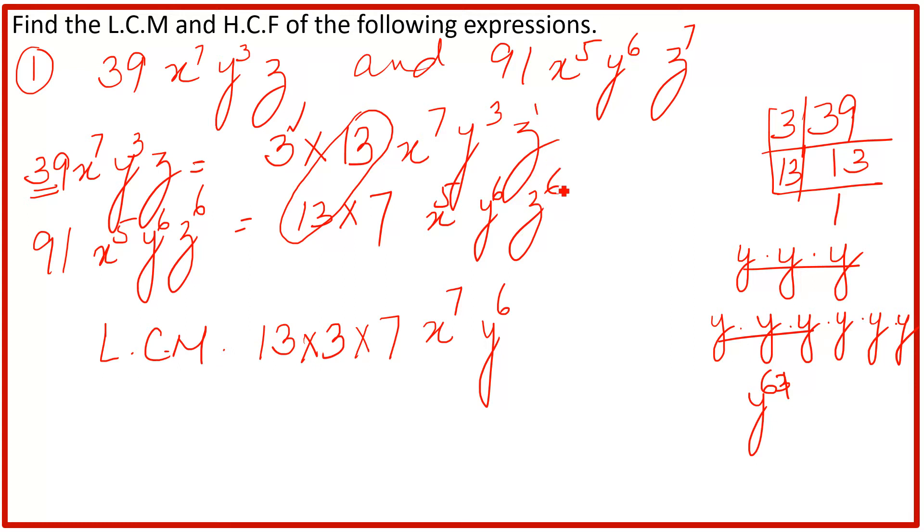Same thing, here 1 is common but we have 7 extra so total. In LCM you have to write down the maximum number. So maximum is 7x, 6y and 7z. Now multiply it, 13 times 3 is 39, 39 times 7 is 273, x^7, y^6 and then z^7. This is the LCM.